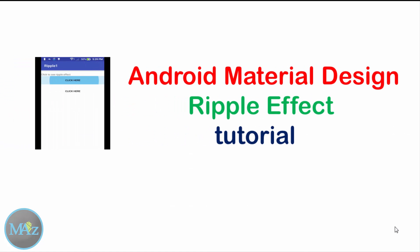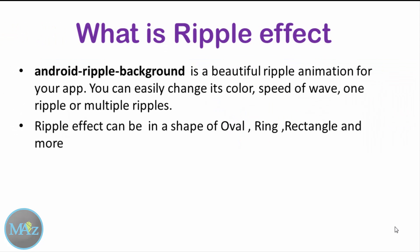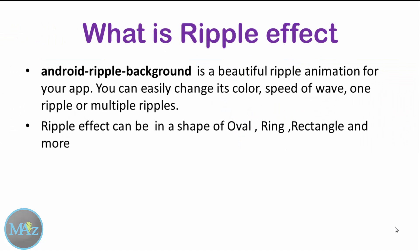Hi, welcome to the tutorial Android Material Design Ripple Effect. What is Ripple Effect? Ripple Effect is an Android ripple background — a beautiful ripple animation for your app. Ripple Effect is used to change colors, speed of the wave, or multiple ripples. Ripple Effect can be in a shape of oval, rectangle, ring, and many more. Let's start how to work with Ripple Effect in Material Design.